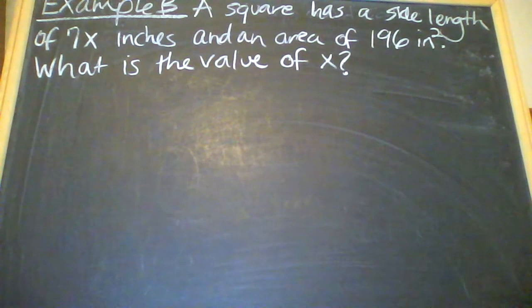Example B. A square has a side length of 7x inches and an area of 196 inches squared. What is the value of x?